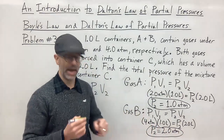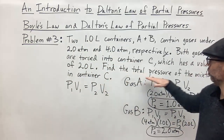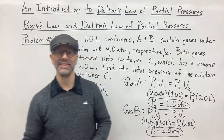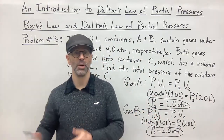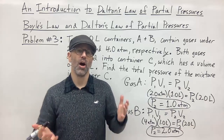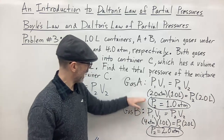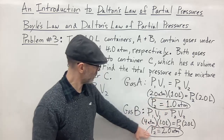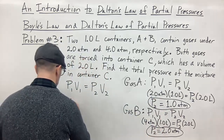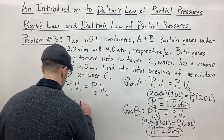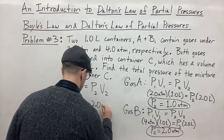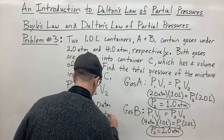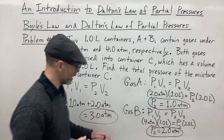The problem asks us to find the total pressure of the mixture. Using Dalton's Law of Partial Pressures, which states that the total pressure equals the sum of all the partial pressures, we just add the partial pressures of gas A and B after they've been moved to container C: 1.0 atmosphere + 2.0 atmospheres = 3.0 atmospheres. So that is your answer.